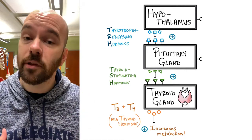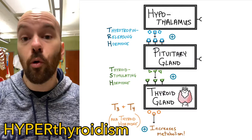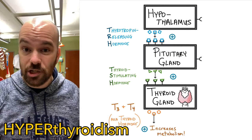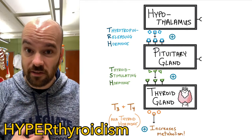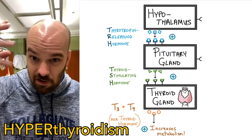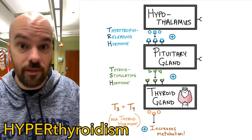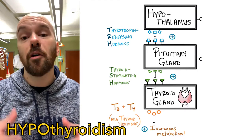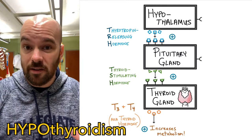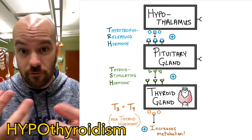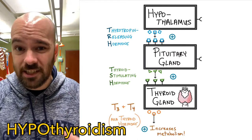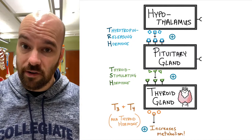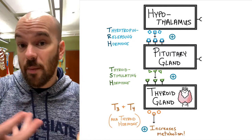Too much T3 and T4 leads to hyperthyroidism — an overactive metabolism where food is broken down into usable energy too quickly. That excess energy can cause a rapid heart rate, jittery hands, and an overactive mind — all common symptoms of hyperthyroidism. If T3 and T4 levels are too low, it causes hypothyroidism: an underactive metabolism that can lead to weight gain and a low energy state or lethargy. Both hypo and hyperthyroidism can be debilitating diseases even though they have opposite effects.